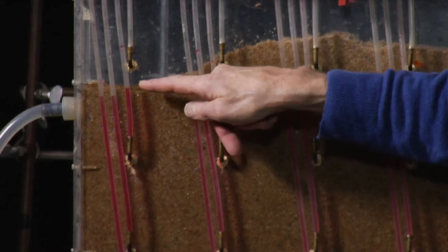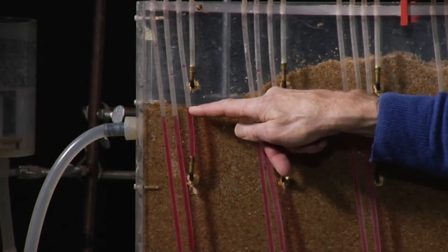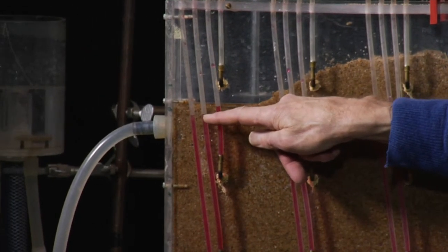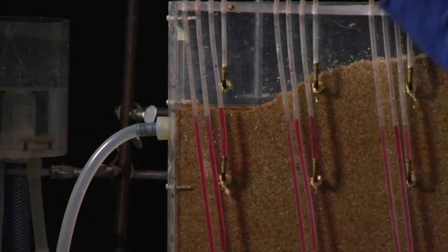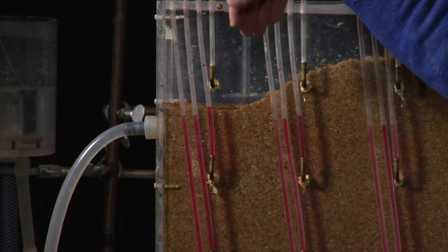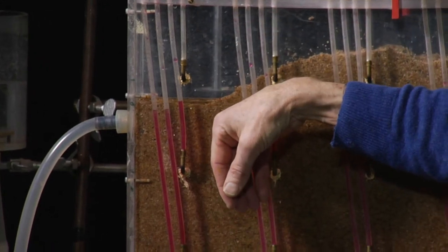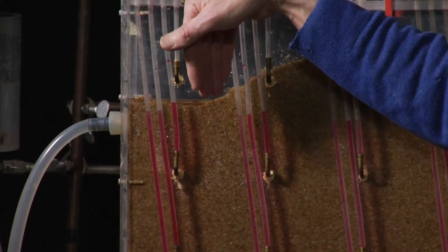The uppermost tube has water level here. The deeper tubes have slightly lower water levels. This shows that there is a downward driving force for the flow, and that the flow has a downward component.